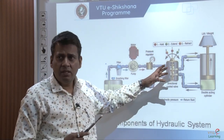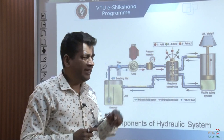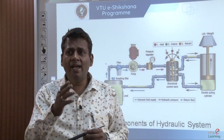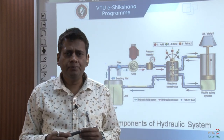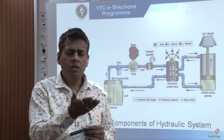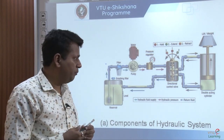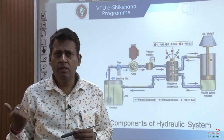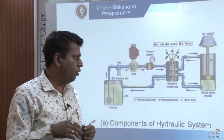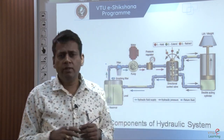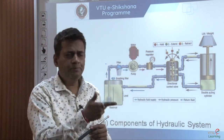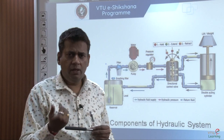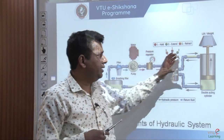The next device is the directional control valve, which changes the direction of fluid flow. Sometimes we need to supply fluid in the forward direction, and in some cases in the reverse direction. The directional control valve changes the flow of fluid either in the forward loop or in the return loop.